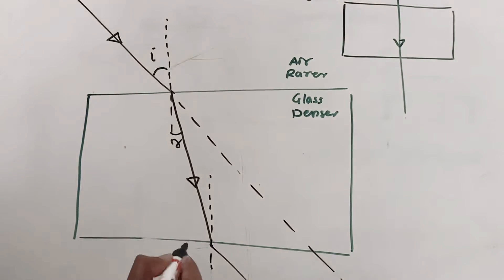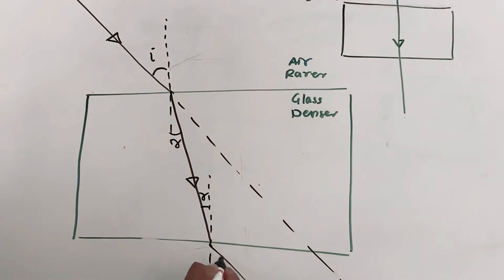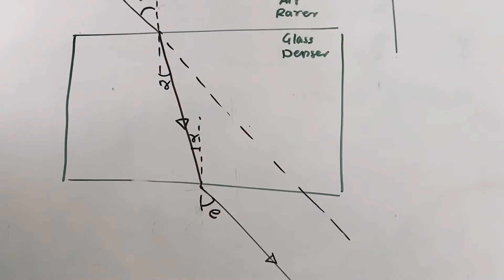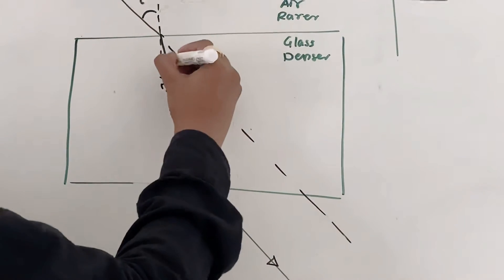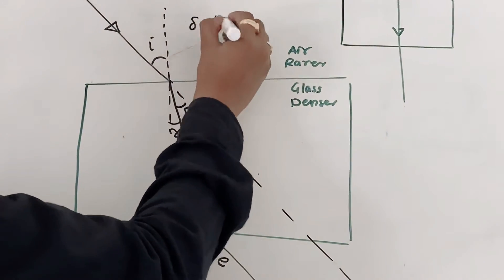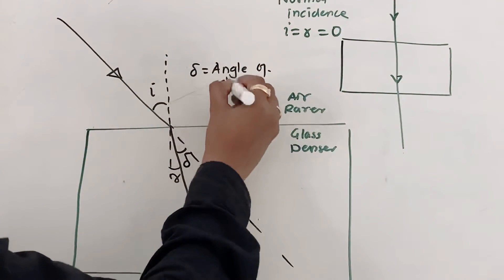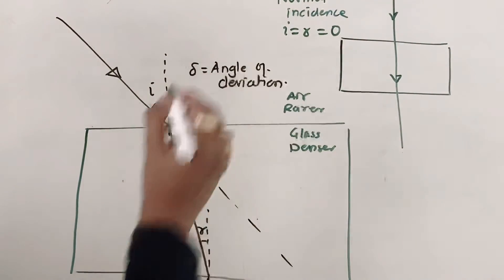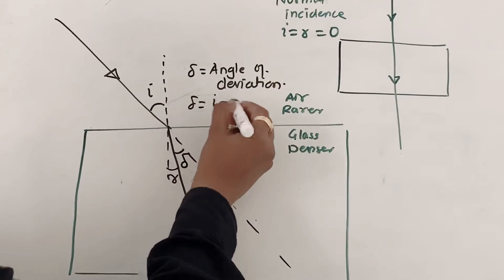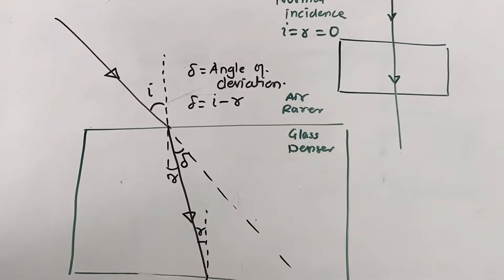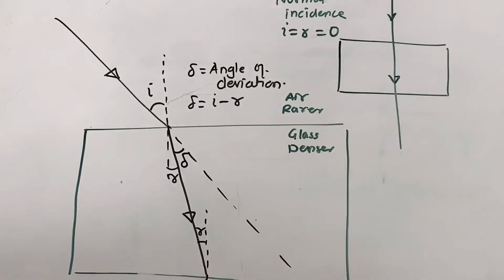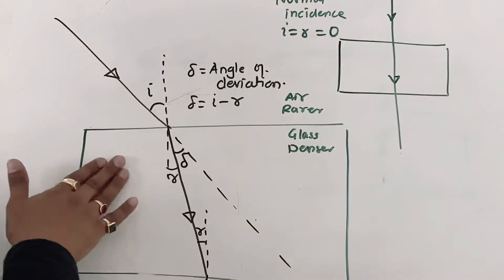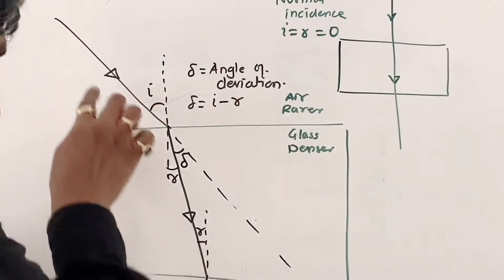This is the angle of incidence i, and this is the angle of refraction r. The emergent ray makes an angle e with the normal. The angle between them is called delta — the angle of deviation. Delta equals i minus r when i is greater than r, or r minus i if r is greater than i, depending on whether light goes from rarer to denser or denser to rarer. Here we assume refraction is from rarer to denser.